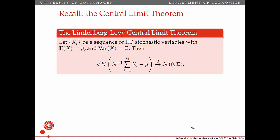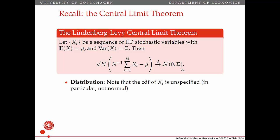Now we want to invoke the central limit theorem — you may remember this mythical theorem from the first statistics course you took. What it says is that if X_i is a sequence of IID stochastic variables with mean mu and variance sigma, then the average of X minus the expectation, blown up by square root of n, stabilizes to become normally distributed asymptotically. Note: we're not saying anything special about X_i — we're not saying it should be normally distributed, just that X_i is IID, meaning it comes from the same distribution. The core of this result is a fundamental property of the sample average.